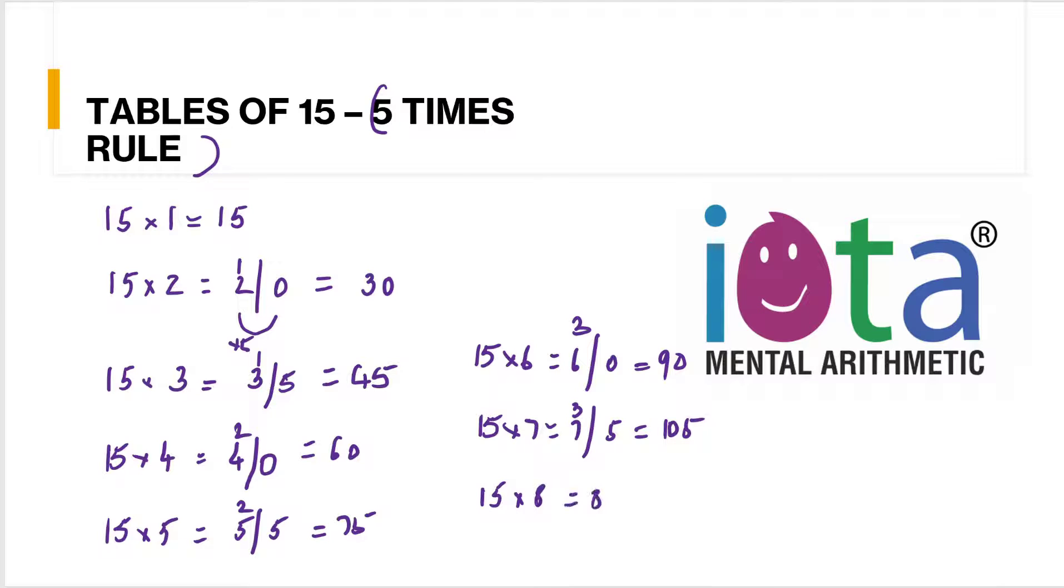15 times 8 - five times 8 will be 40, so that's 120. Then 15 times 9, five times 9 will be 45, so that's 135. And 15 times 10 will be 150. Very easy, students, you don't have to get any confusion here.